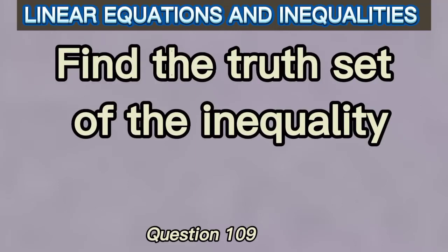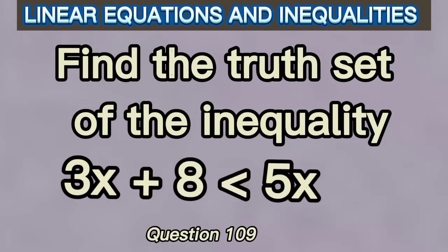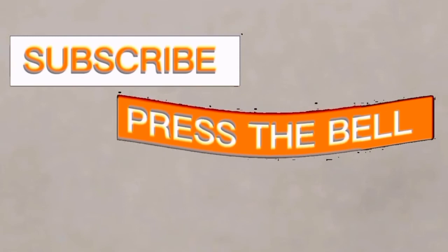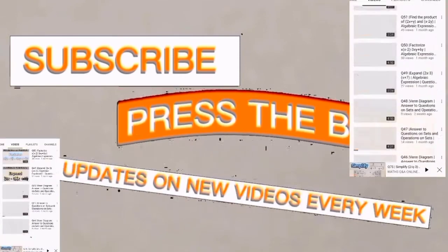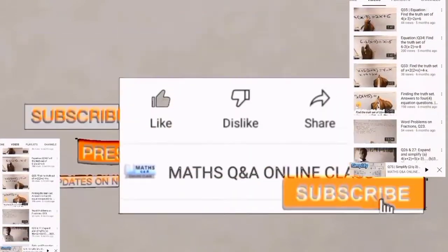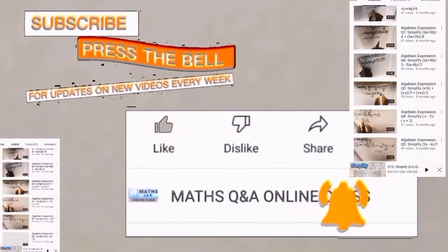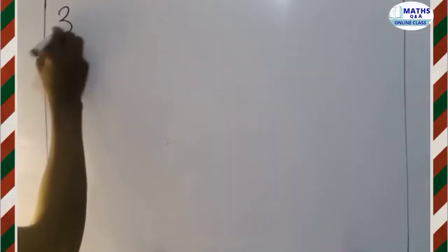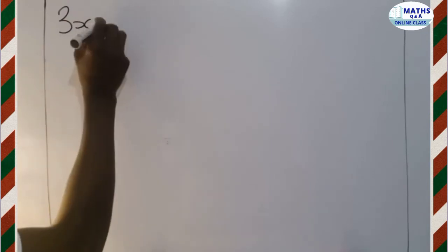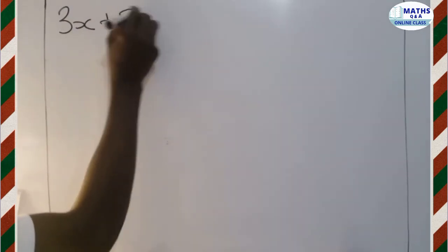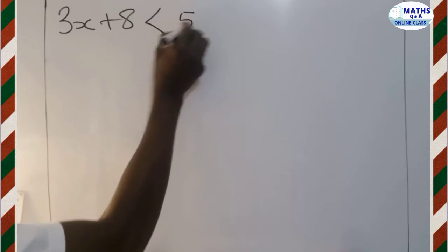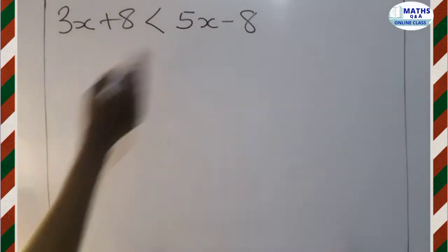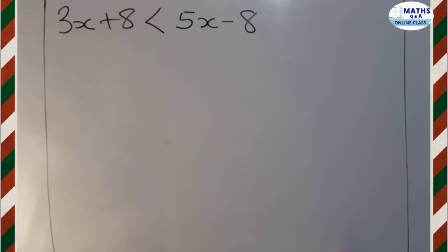Find the truth set of the inequality 3x plus 8 less than 5x minus 8. So our question is 3x plus 8 less than 5x minus 8. This is the inequality question given to us and we are to find the truth set of it.